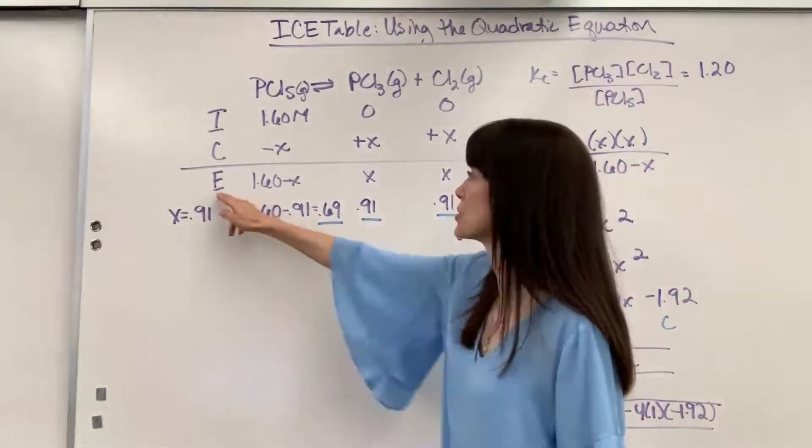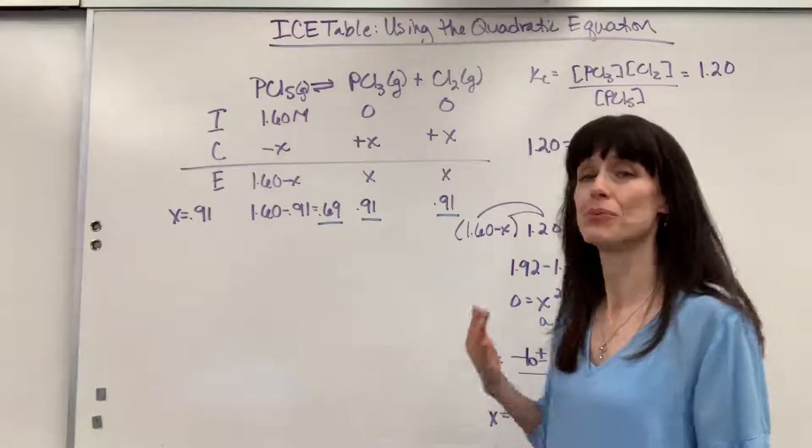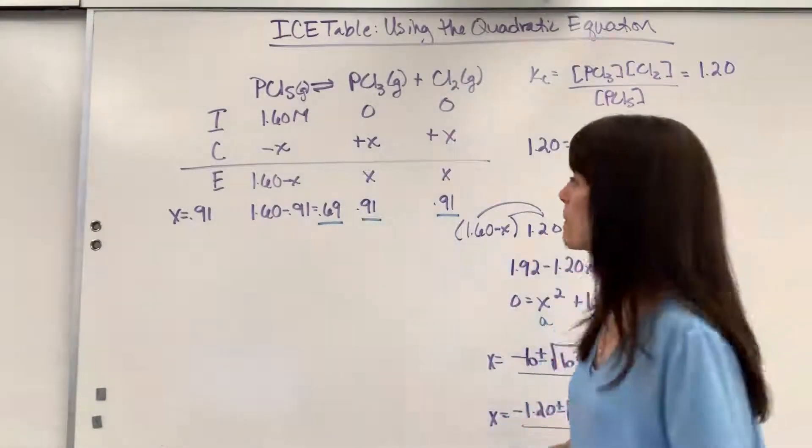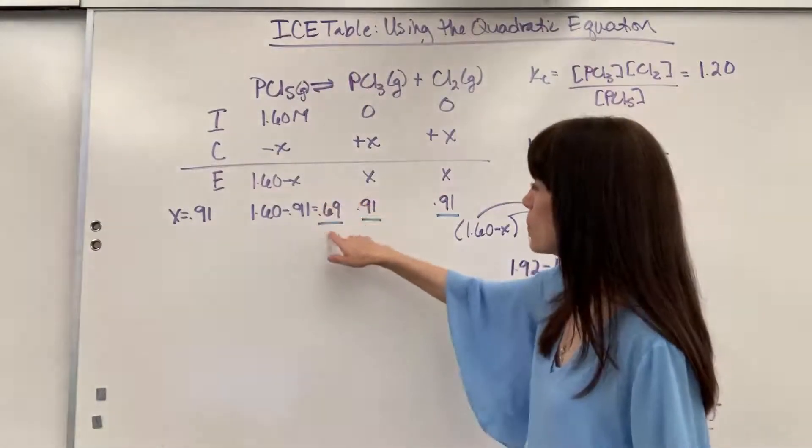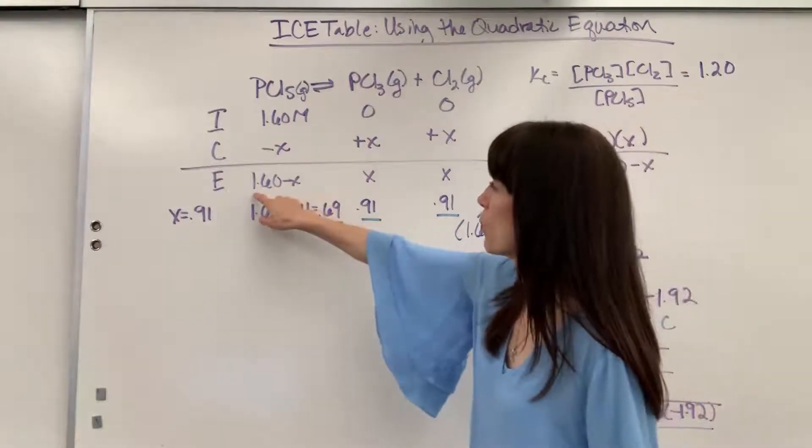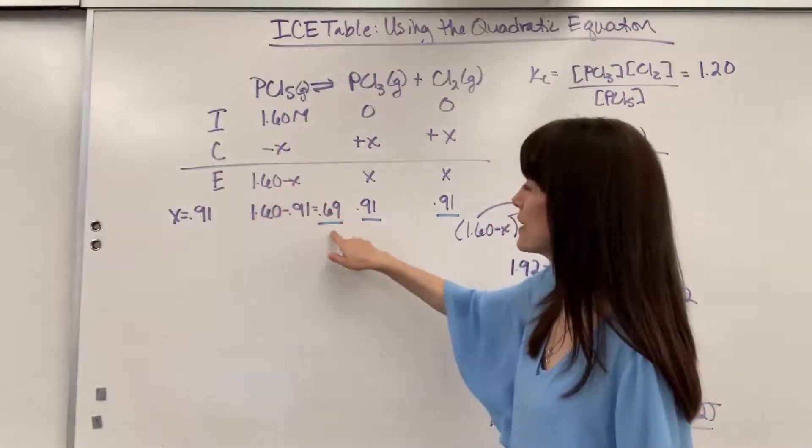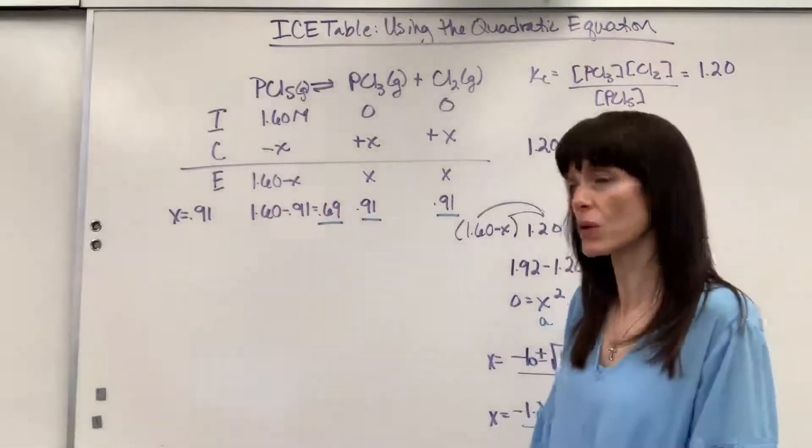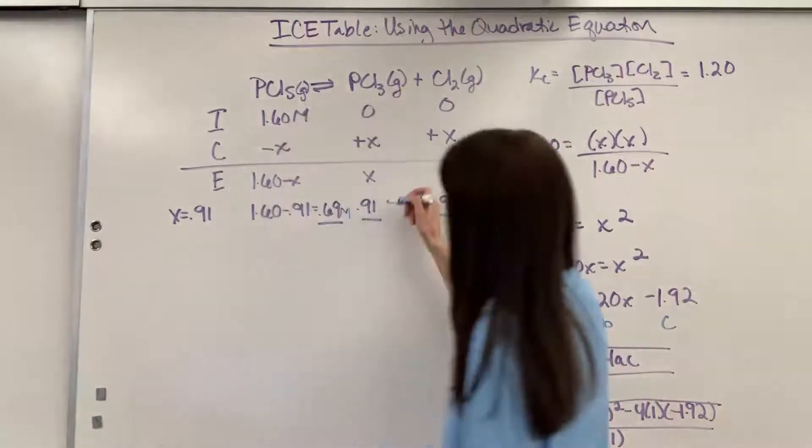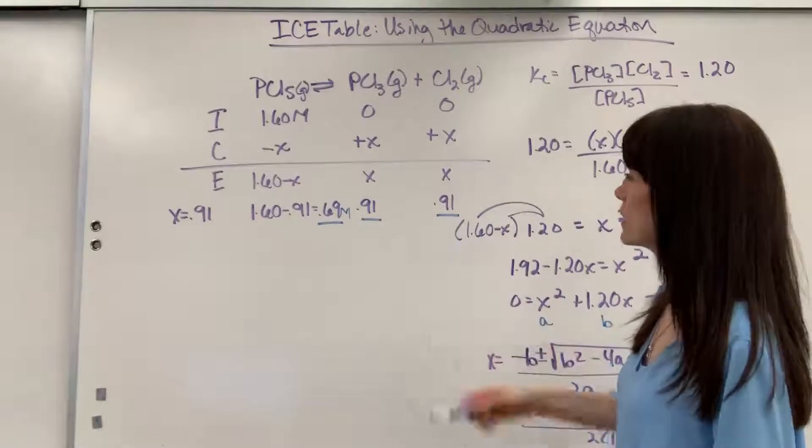Well, now we can come back to our equilibrium values and plug in for X, since we solved for X. So X is going to be 0.69. We need to do 1.6 minus X, that's 0.69. Remember this is molar. That's going to be molarity. X, 0.91, X, 0.91.